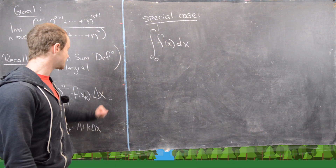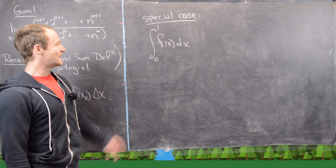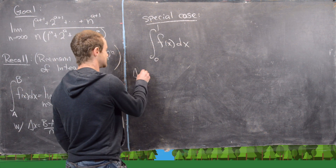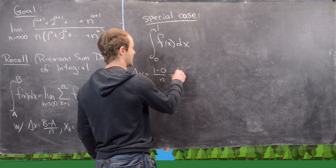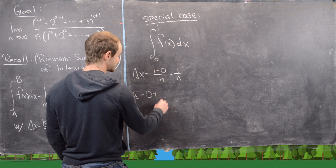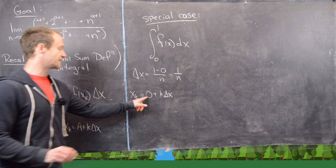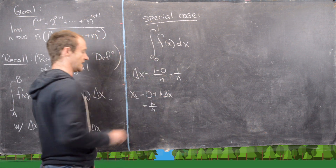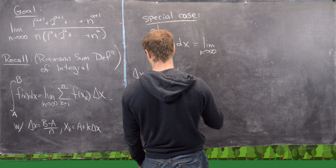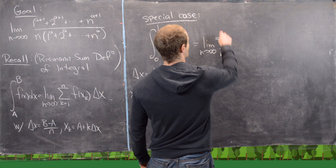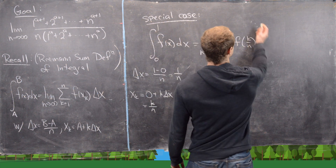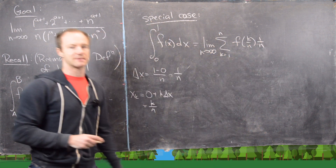Now we want to look at a special case, which is what we'll use for our problem. That special case is the integral from 0 to 1 of f(x) dx. In that case, Δx equals (1 − 0)/n, which is just 1/n. And x_k is 0 plus k times Δx, so because 0 is the lower bound, that's just k/n. So we can rewrite this as the limit as n goes to infinity of the sum k equals 1 to n of f(k/n) times 1/n, where f(k/n) plays the role of x_k and 1/n is Δx.